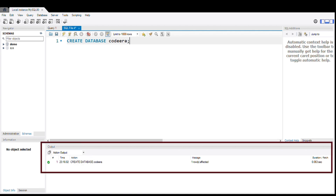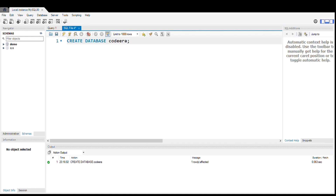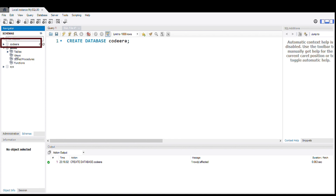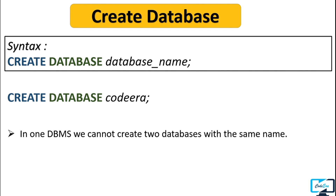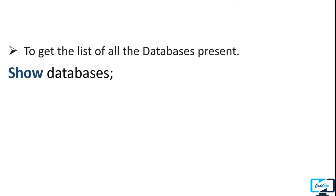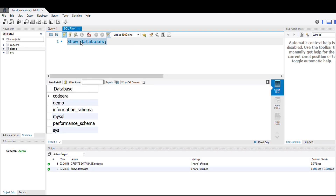Our query is executed successfully and a new database is created. To verify, simply refresh the schemas and you can see our database is created. One important thing: you can't create two databases with the same name in one database management system — your database name must be unique. You can also run the command SHOW DATABASES to display the list of all databases present in the system. You can see that our database Codera is present in the list.